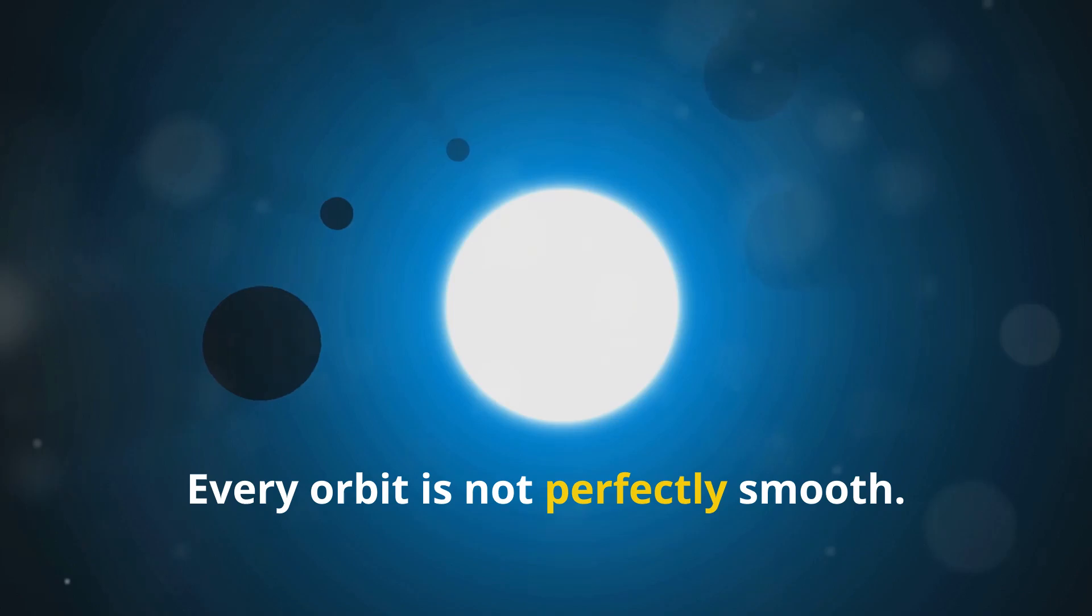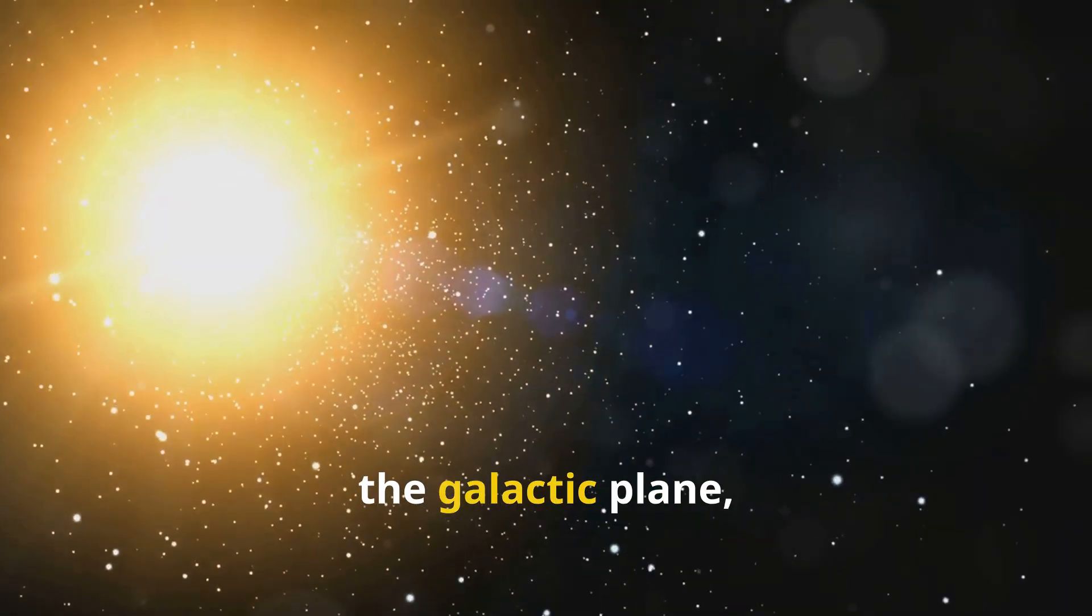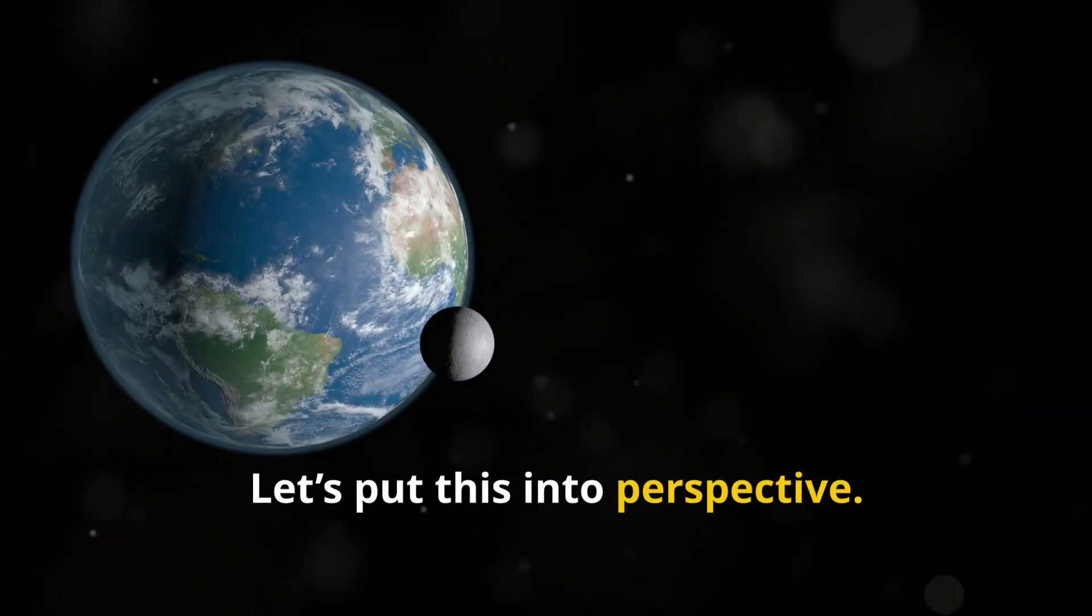Every orbit is not perfectly smooth. Sometimes the sun dips above and below the galactic plane, like a cosmic roller coaster.